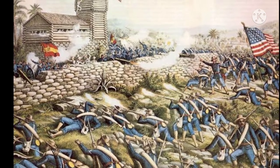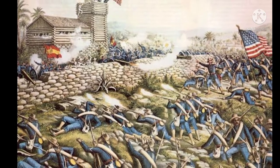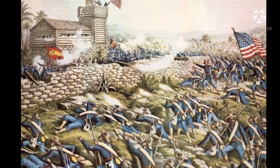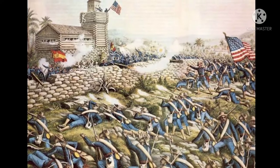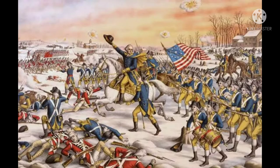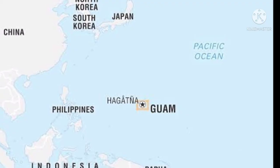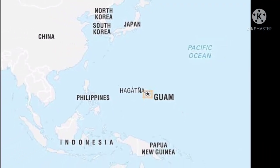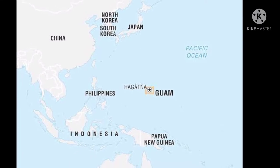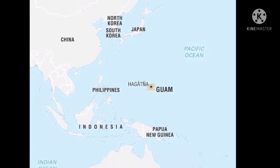It made it easier for expansionist President William McKinley to push United States influence abroad. The key turning point came in 1898, when McKinley dragged the country into war with Spain over the island of Cuba. The rising US military easily defeated the Spanish Empire, acquiring Puerto Rico, Guam, and the Philippines in the process.